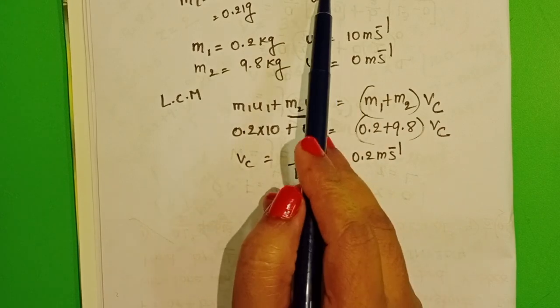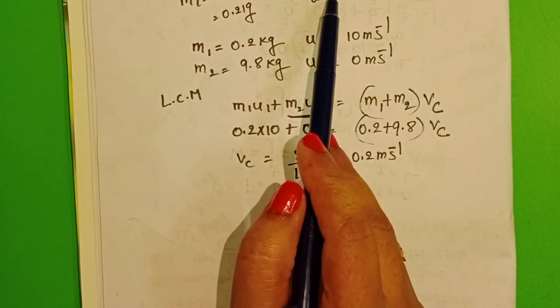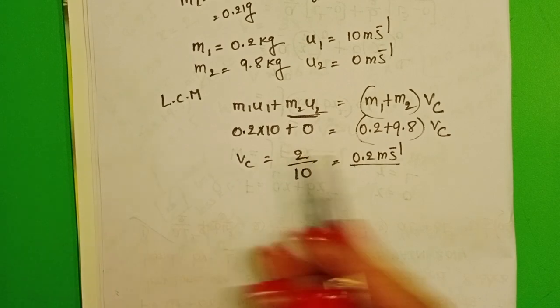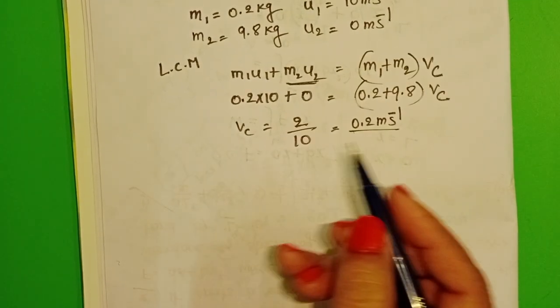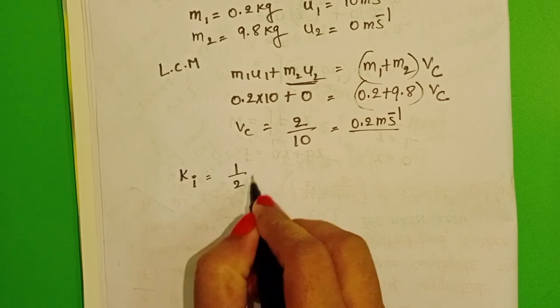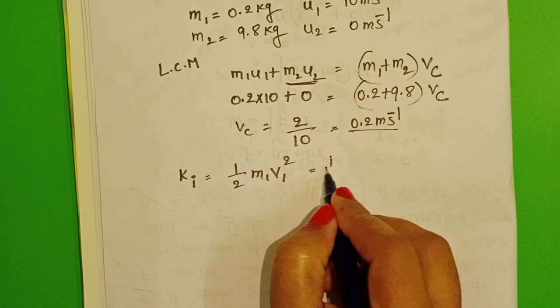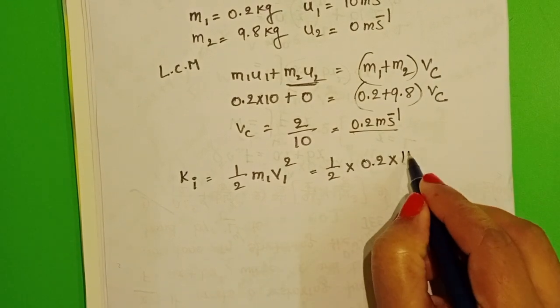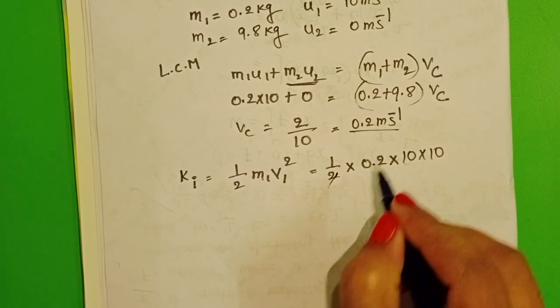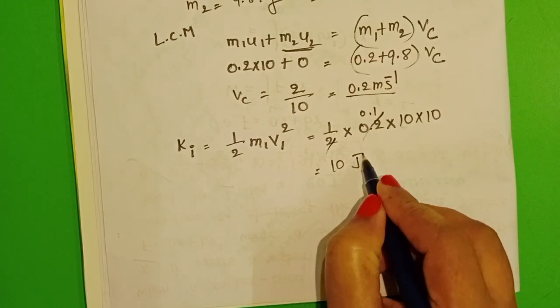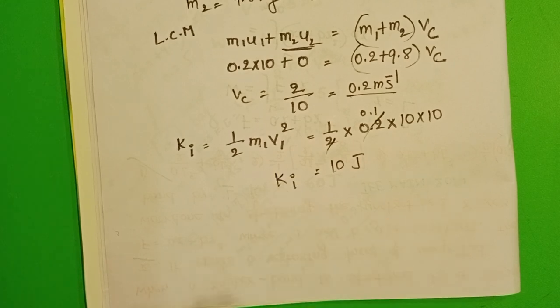After then, the sand bag with the bullet moves with common velocity 0.2 meters per second. Find out the initial kinetic energy of the bullet: half M1 V1 square, half into 0.2 into 10 into 10. That's 10 joules. This is the initial kinetic energy.